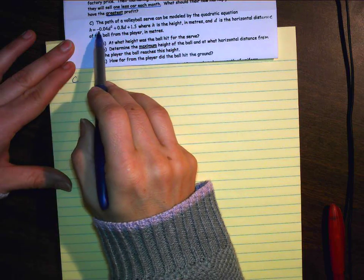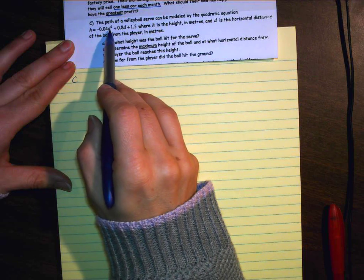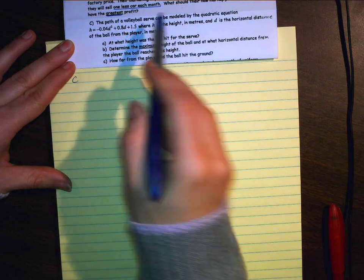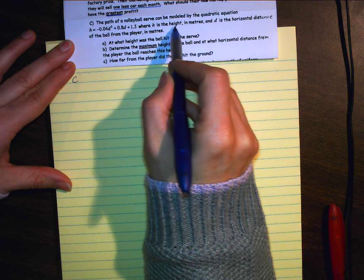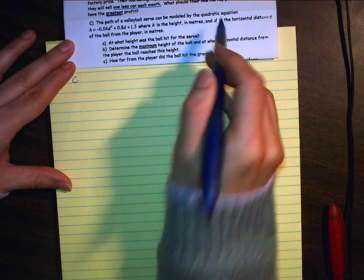h equals negative 0.04d squared plus 0.8d plus 1.5, where h is the height in meters and d is the horizontal distance from the player in meters.